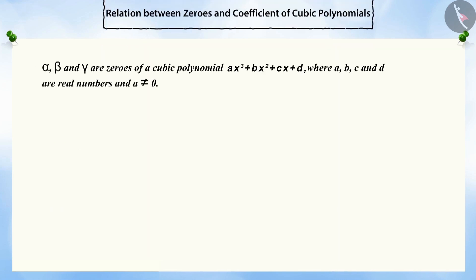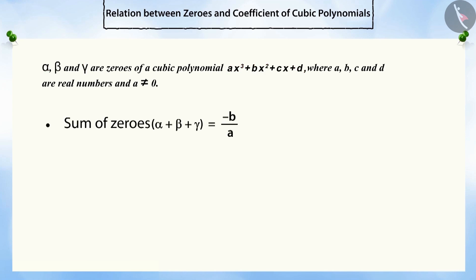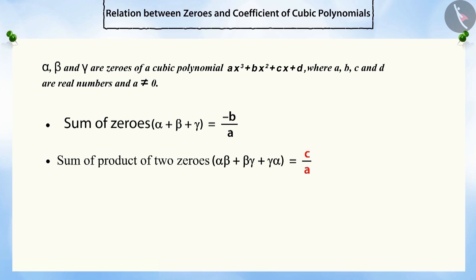Similarly, if alpha, beta, and gamma are zeros of a cubic polynomial AX cubed plus BX squared plus CX plus D, then the sum of the zeros is minus B by A, the sum of the product of two zeros is C by A, and the product of all zeros is minus D by A.